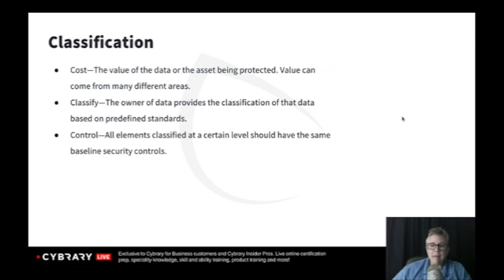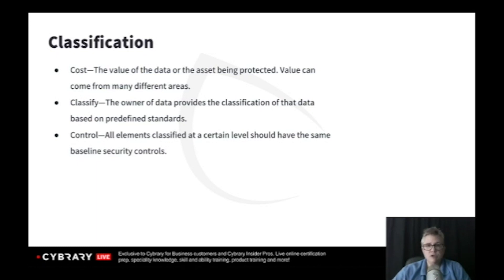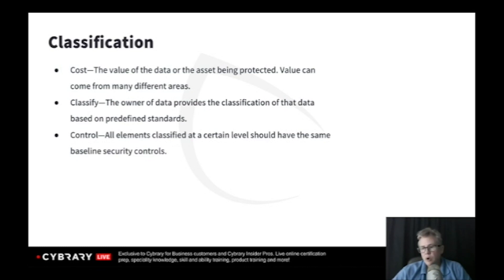Classification of data — anytime you think about that, think of the three C's: cost, classify, control. Another word for cost is value, and that's really the phrase to use. When looking at sensitive information and confidentiality, the first thing is to figure out the value of the data. Value includes sensitivity, harm if compromised, liability issues — all of those things make up the value of data.